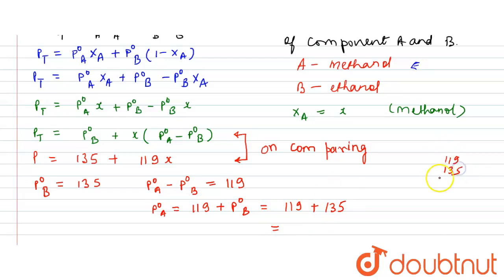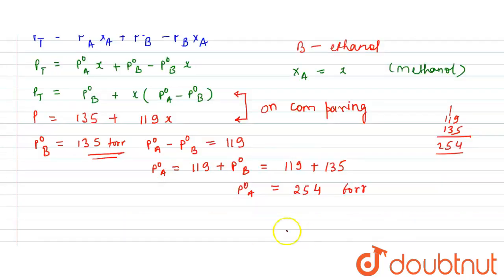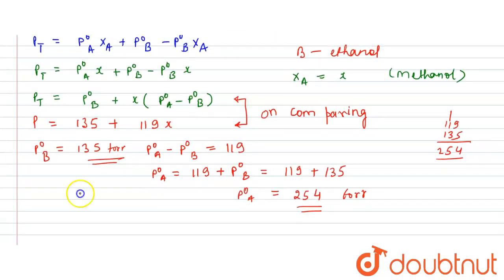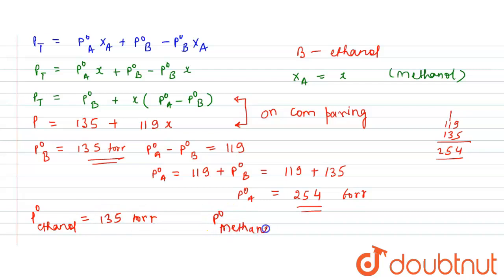So P⁰_A equals 119 plus 135, which gives us 254 Torr. Therefore, P⁰_A — the vapor pressure of pure methanol — is 254 Torr, and P⁰_B — the vapor pressure of pure ethanol — is 135 Torr.